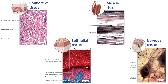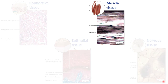Recall from our earlier introduction to tissues that muscle is one of the four primary tissue types, along with connective tissue, epithelial tissue, and nervous tissue. Muscle tissue is composed of specialized cells called fibers that respond to electrical stimulation from the nervous system by undergoing internal changes that cause them to shorten. This shortening then exerts physical forces on other tissues and organs to produce movement.